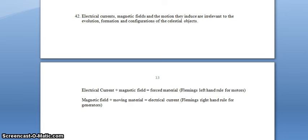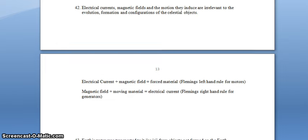Electrical currents, magnetic fields, and the motion they induce are irrelevant to the evolution, formation, and configuration of the celestial objects. Here I have electrical current plus magnetic field equals force on material. That's Fleming's left hand rule for motors. A magnetic field plus moving material equals electrical current. Fleming's right hand rule for generators. That's also MHD or EMHD or Electromagnetohydrodynamics. Han Alfven was a big proponent of that.